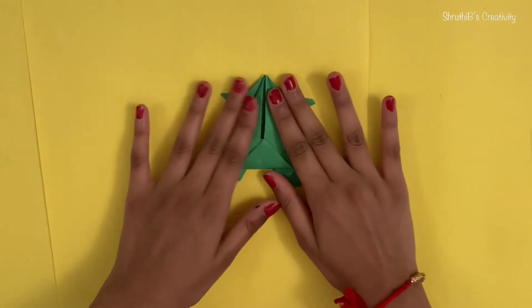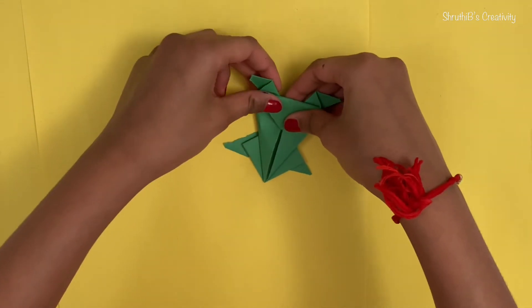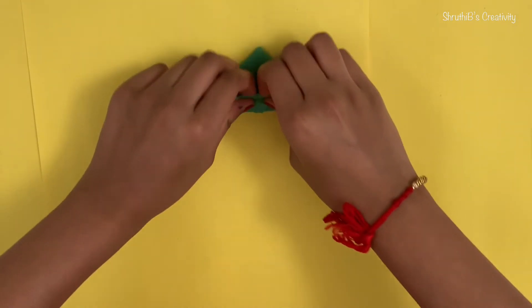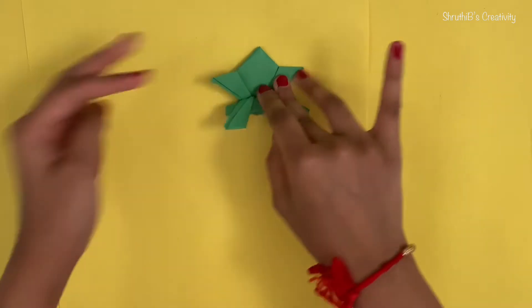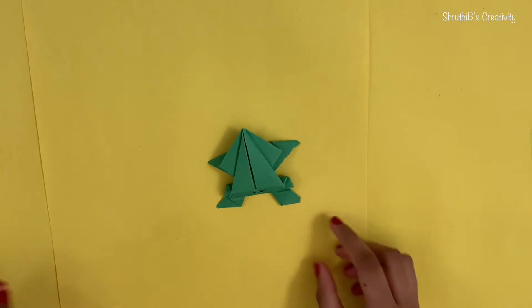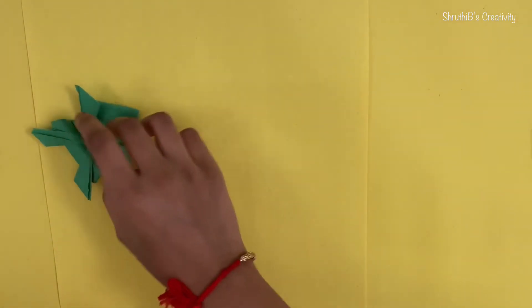There you have it. A frog. Just kidding. So we have more steps to go. You're going to have to fold it like this. And voila. So yeah. And there you go. You have a small DIY origami frog.